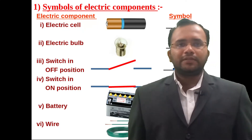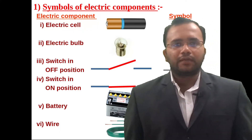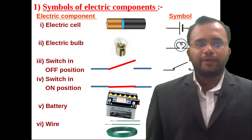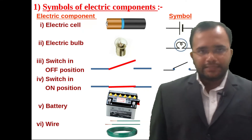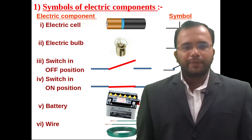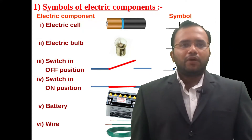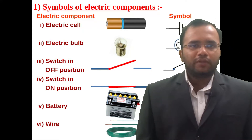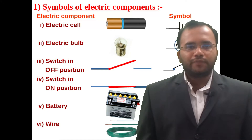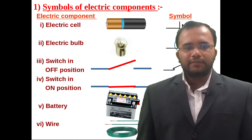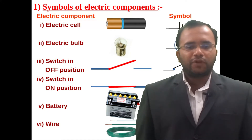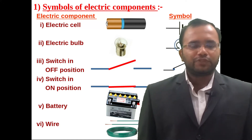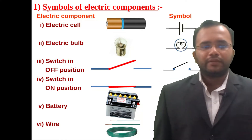The symbolic representation of electric current and its components — that is electric cell, electric bulb, switch on and switch off positions, battery, and wire.